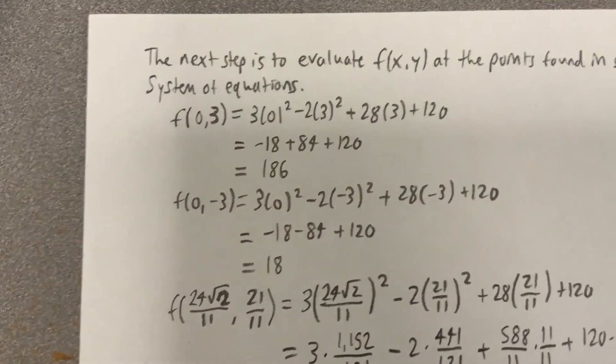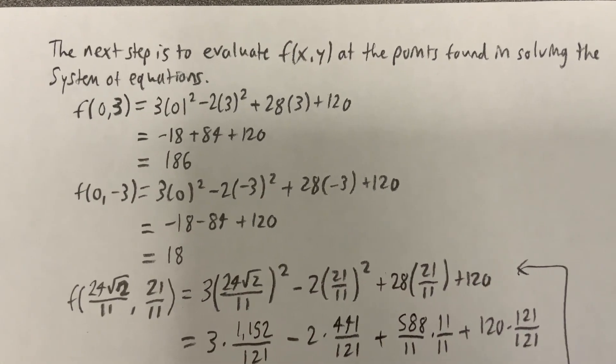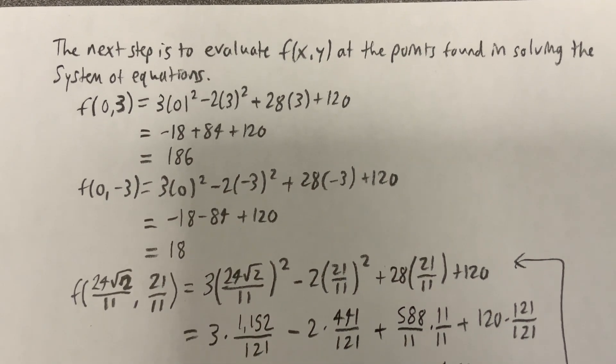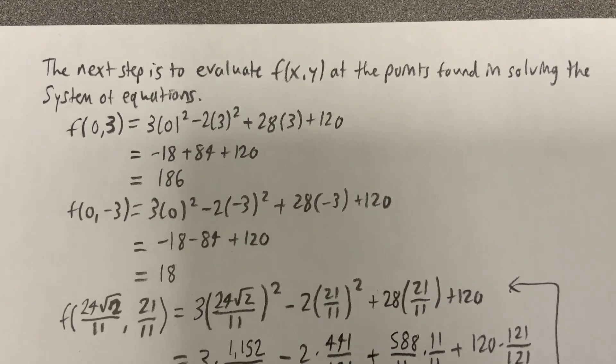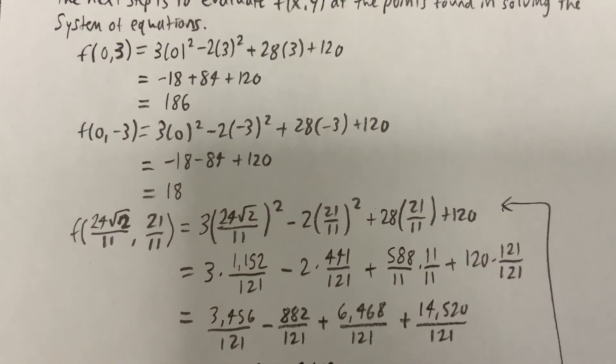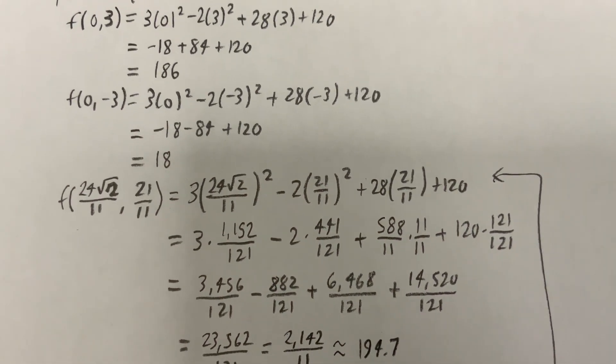So the next step is to evaluate f(x,y) at the points found in solving the system of equations. So f(0,3) will be 186, and there's the algebra and arithmetic associated to it. Then we've got f(0,-3), which will give us an 18.